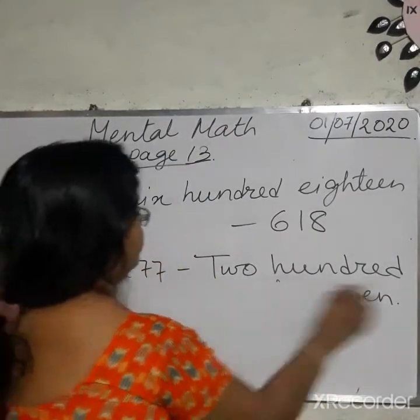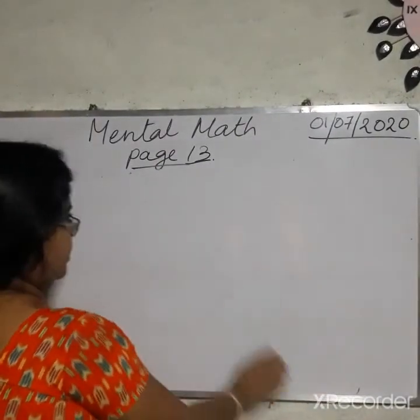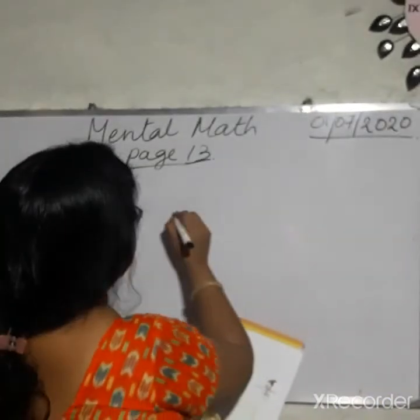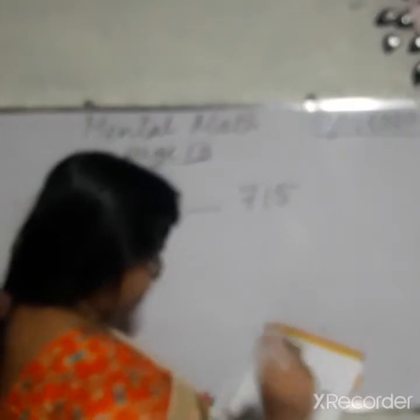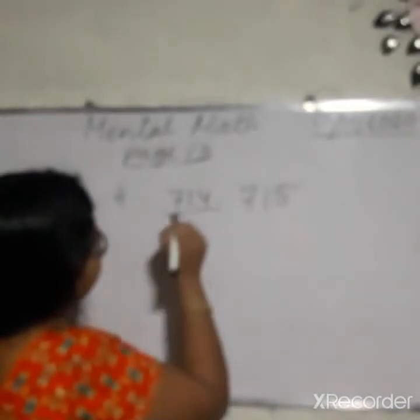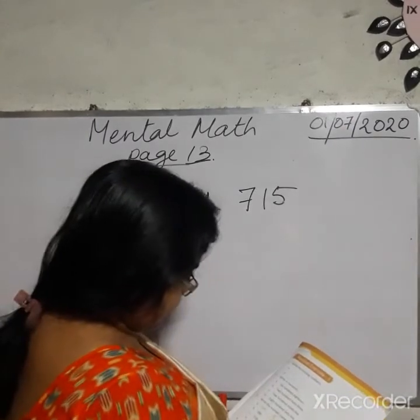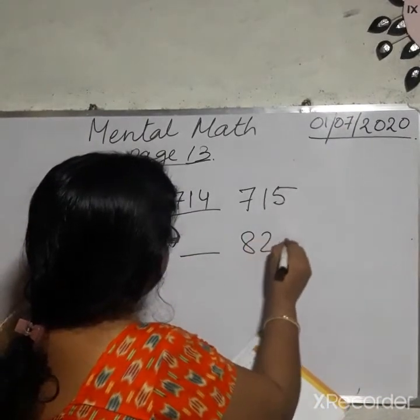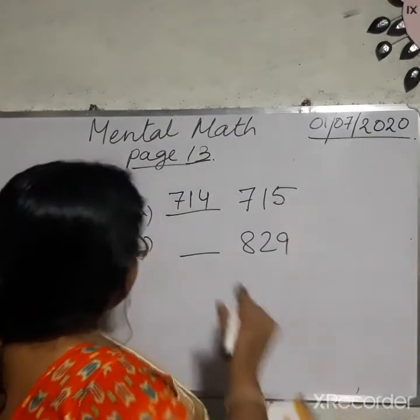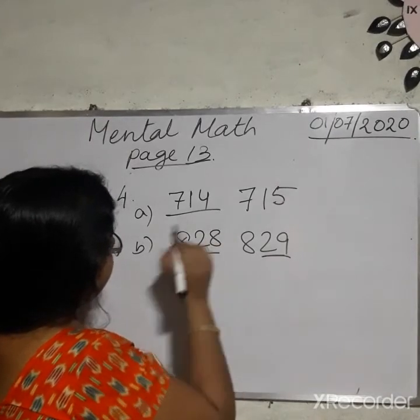Next, number 4 of page 13: what comes before? What comes before 715? That is 714. Number B: what comes before 829? That is 828.